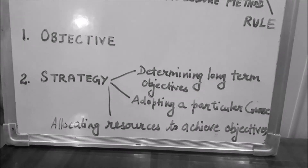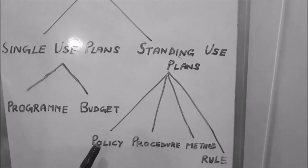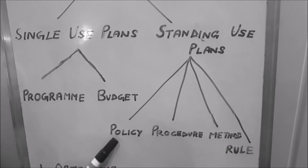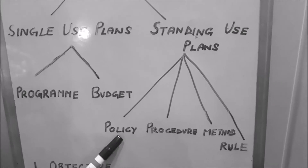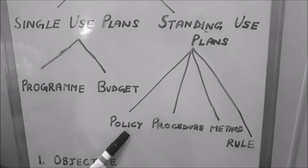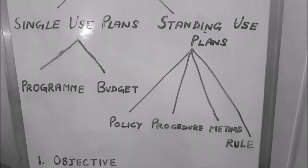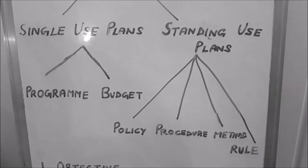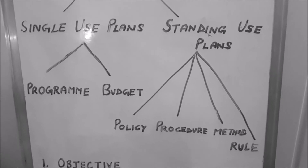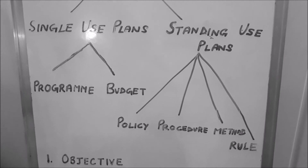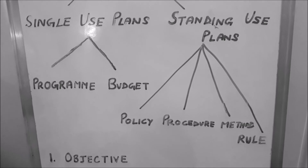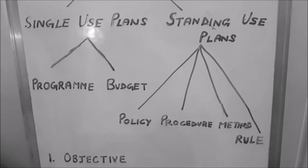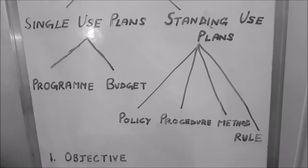Now we will move to the standing use plans. The first standing use plan is policy. Policy is the general statement which guides managers while taking decisions, or you can say policies are the manager's own way of handling situations. For example, a policy can be that credit sales are not allowed, or the firm deals with wholesalers only, meaning the firm sells goods only to wholesalers and has no contact with retailers or consumers.